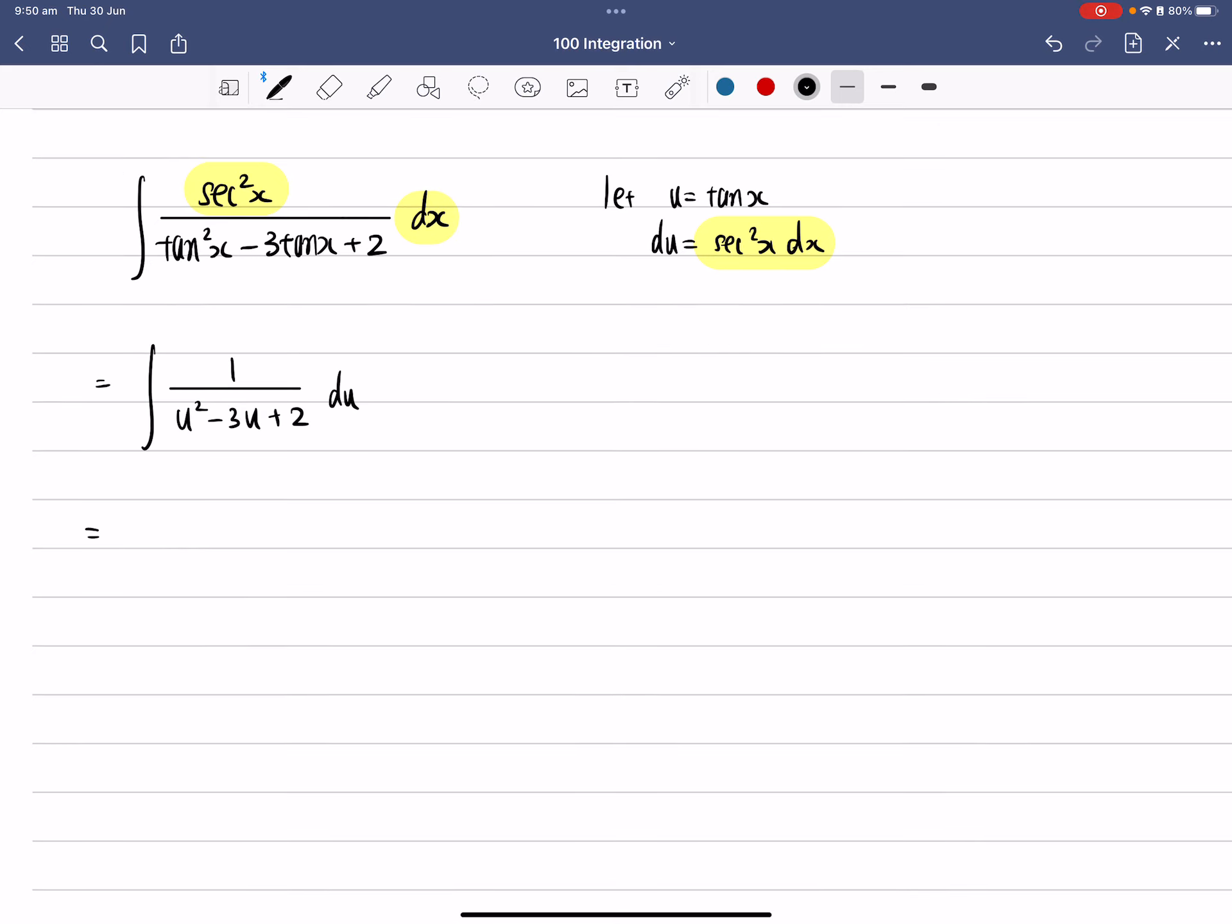Alright, so now, as I said previously, the denominator looks like a quadratic trinomial. So we're going to factorize it. So that should give us 1 over (u - 1)(u - 2) du.